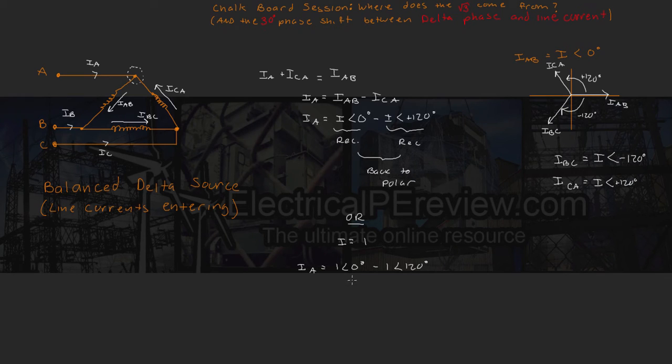So we rewrite our equation as Ia equals one phase angle zero minus one phase angle 120 degrees. Now it's a lot easier to do our complex math if we're using one instead of a variable I. So when we carry this out, going to rectangular, then back to polar, or if we've got a calculator that can handle subtracting two polar numbers, we plug it in and we end up with Ia equals square root three at a phase angle of minus 30.